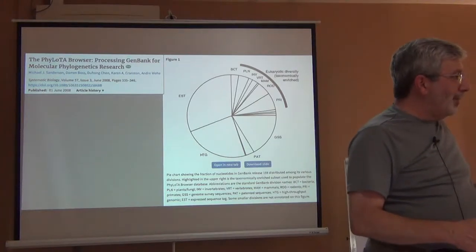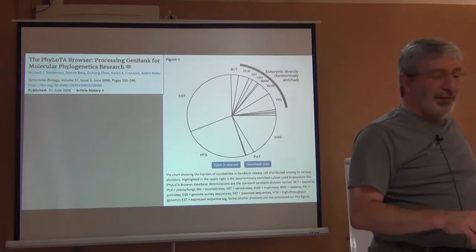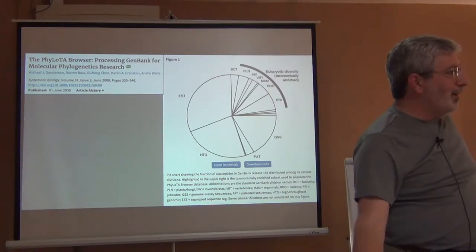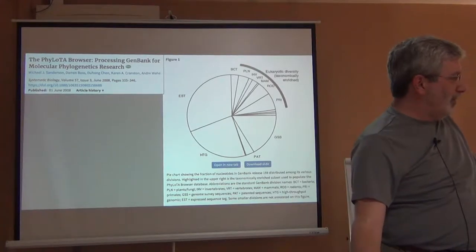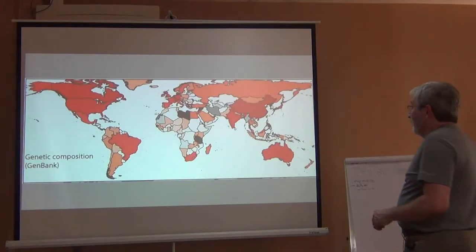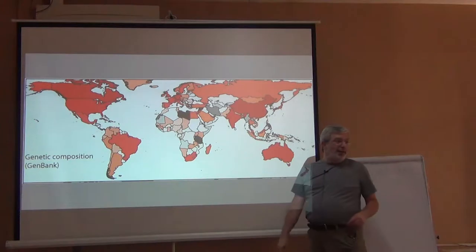Now I'm going to show you a map by country, because it was the best that could be done at the time, of where GenBank sequences come from. And you'll see one thing right away about it. Red is lots of sequences. You get it?